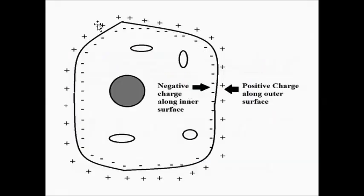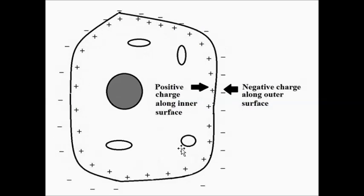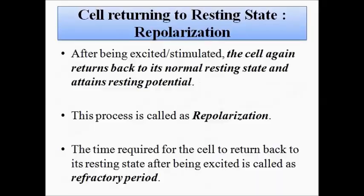To summarize the cell behavior: in the resting state there is negative charge along the inner surface and positive charge along the outer surface of the cell membrane. In the excited state it is the opposite — positive charge along the inner surface and negative charge along the outer surface. They are just the opposite of each other.